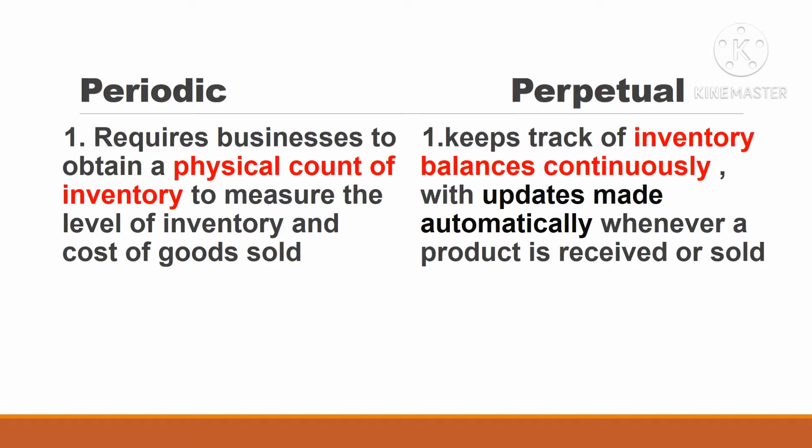We can see the difference between periodic inventory system and perpetual inventory system. Number one, under periodic, it requires businesses to obtain a physical count of inventory to measure the level of inventory and cost of goods sold. Whereas under perpetual inventory system, it keeps track of inventory balances continuously with updates made automatically whenever a product is received or sold.